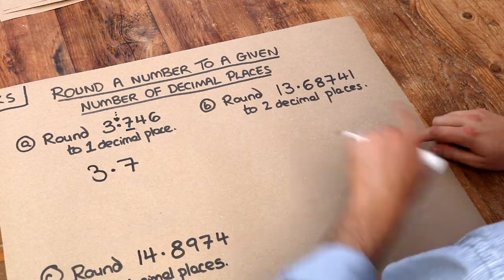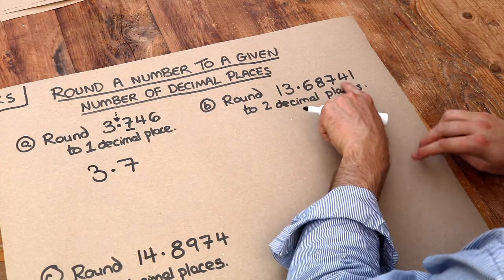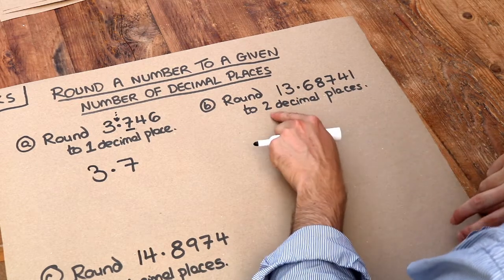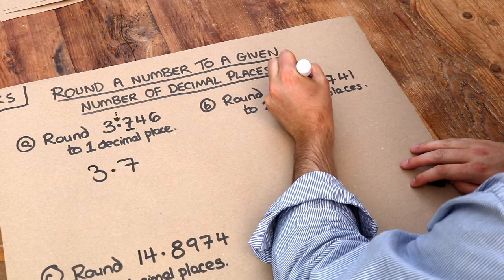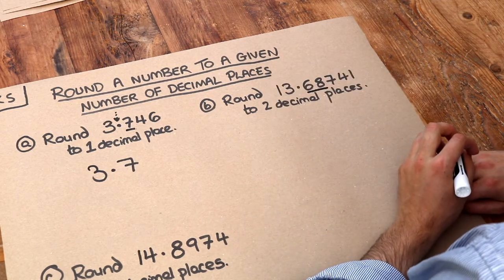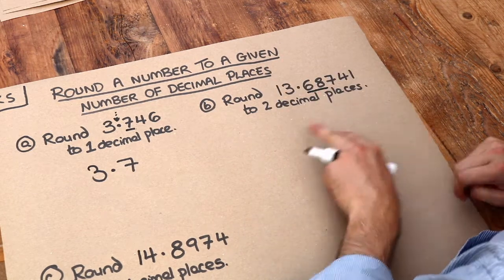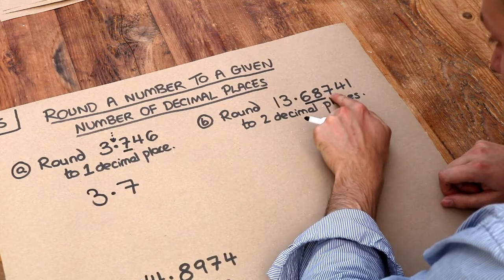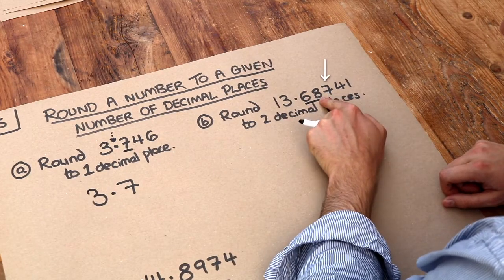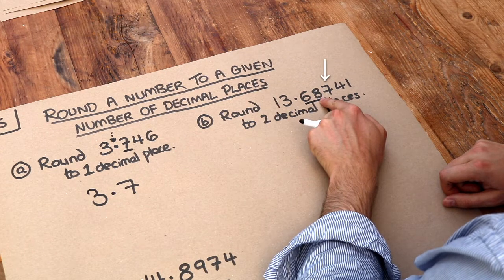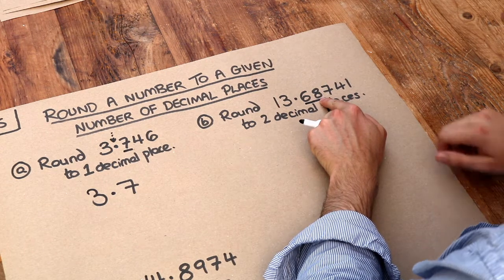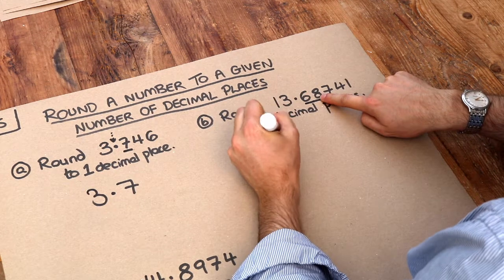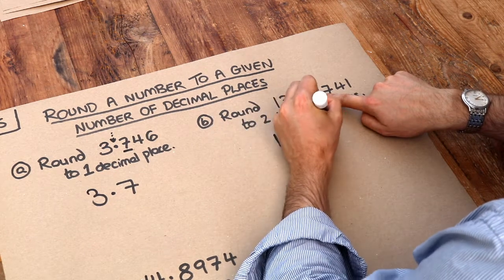What about this second one? We want to round 13.68741 to two decimal places. Because it's two decimal places, we want to keep two digits after the decimal point, so we underline those. We look at the digit just after those we've underlined. Is that digit 5 or more? Yes, it is. Therefore, that's going to go up by one, so we get 13.69.